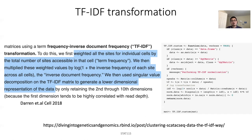With this word-by-document matrix, one can find which documents are more similar to each other — for example, some written by Shakespeare versus others — and everyone has different preferences for word usage.